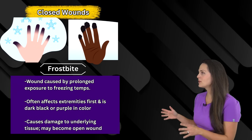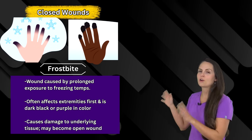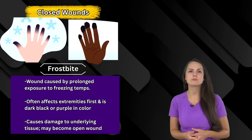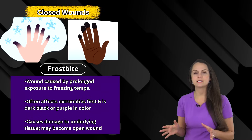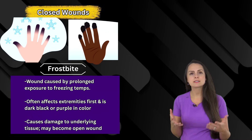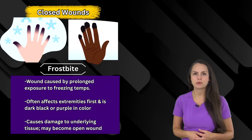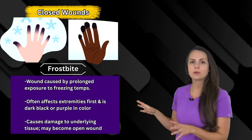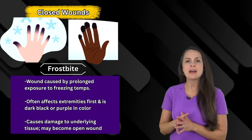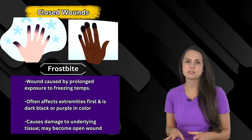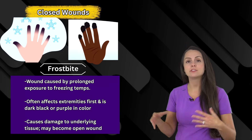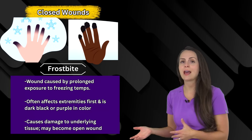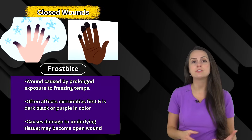Our last type of closed wound is frostbite. This develops whenever someone has prolonged exposure to freezing temperatures, and it often affects extremities like the fingers and toes. It can present as being dark purple or black. In cases of severe frostbite it can actually affect the underlying tissues, which unfortunately may result in actually losing those tissues.